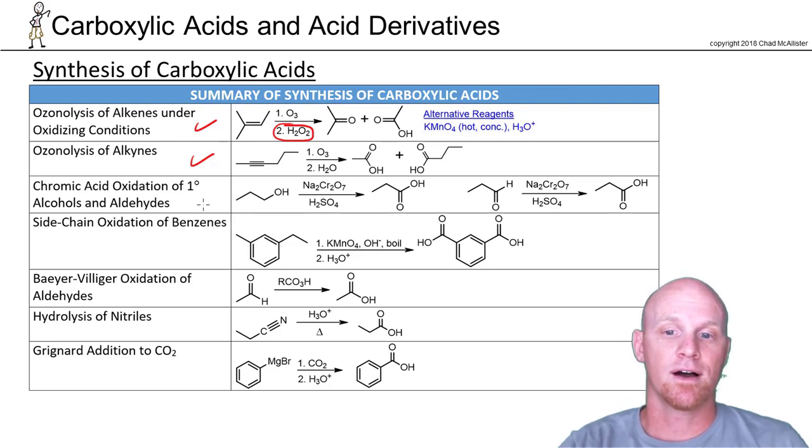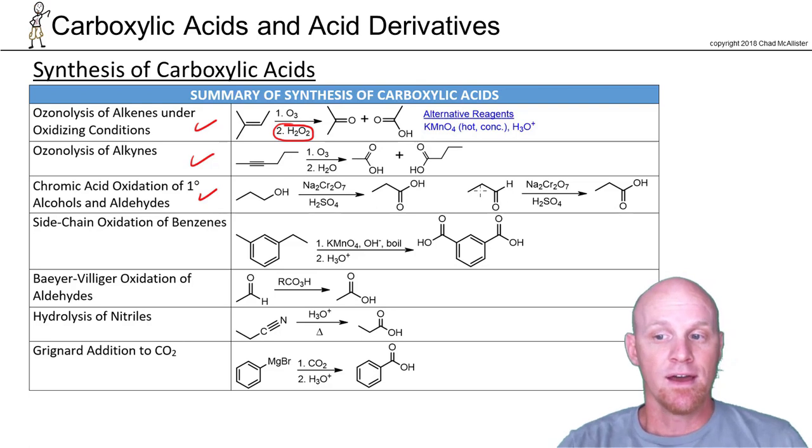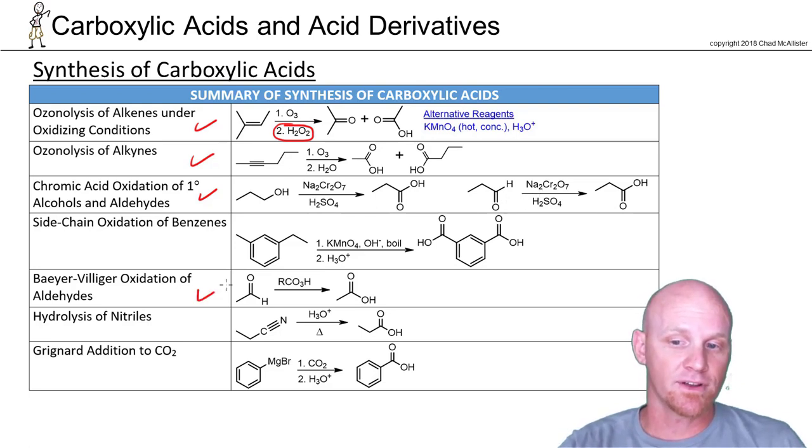You can also oxidize primary alcohols and aldehydes. Initially the primary alcohol turns into an aldehyde and gets further oxidized. That's why you can simply oxidize the aldehyde with chromic acid as well. You also learned the Baeyer-Villiger oxidation—when you start with an aldehyde it will also oxidize it to a carboxylic acid.